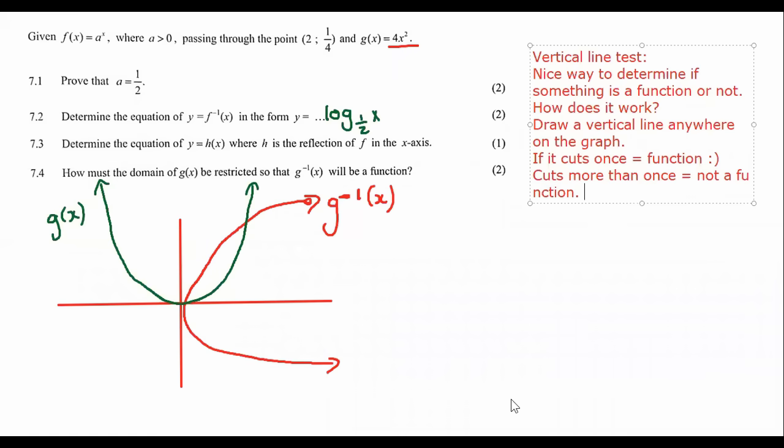How does it work? Draw a vertical line anywhere on the graph. If it cuts once, then it's a function. Cuts more than once, not a function. That's what the vertical line test is. So what I mean is, let's say we draw a vertical line through the parabola. If I draw a vertical line through the parabola, how many times does it cut the parabola? It only cuts the parabola once. So because of that, it's a function. We know that a parabola is a function. We've been doing functions since grade 9 or since grade 10 for parabolas. But if I draw a vertical line through the inverse, we have a problem. Can you see that it cuts the inverse more than once? It cuts it there, and it cuts it there. And so that is not a function.